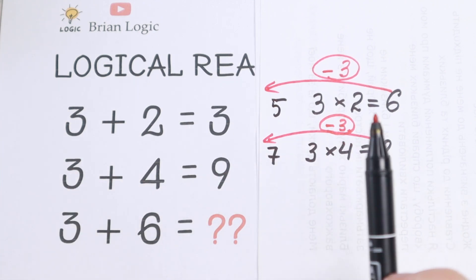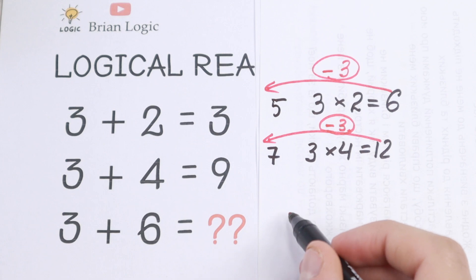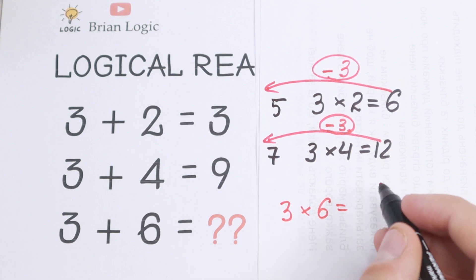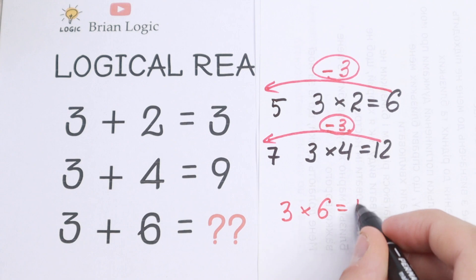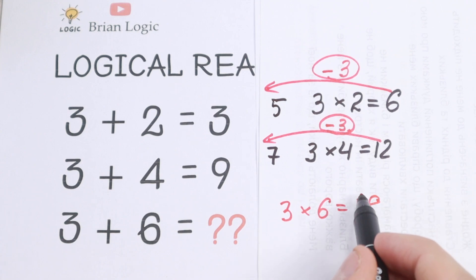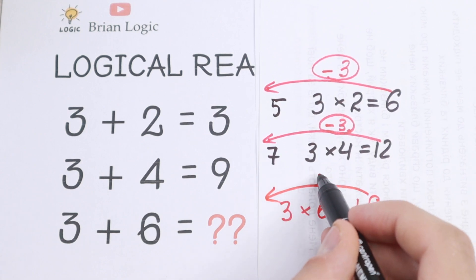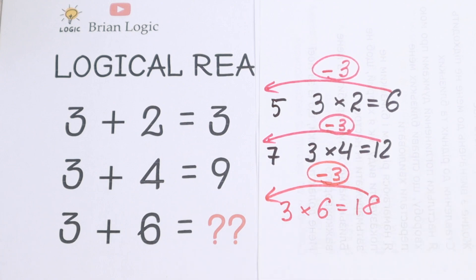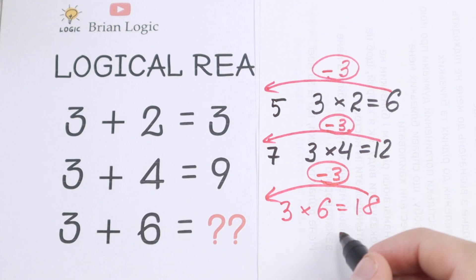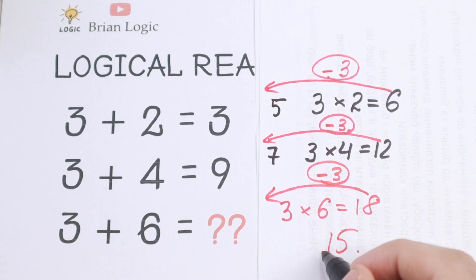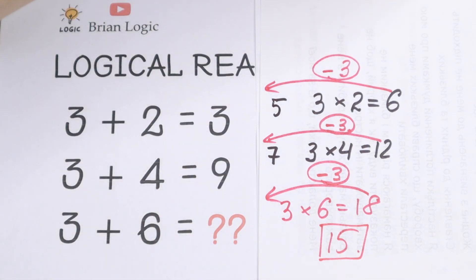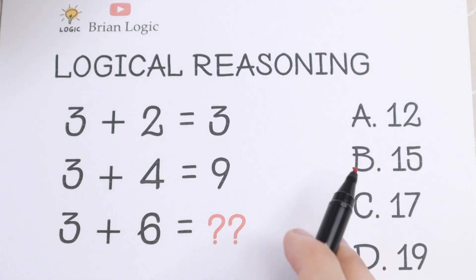Using the same logic for 3 plus 6: 3 times 6 equals 18, and of course we subtract 3, giving us 15. So our answer is 15, which corresponds to option B.